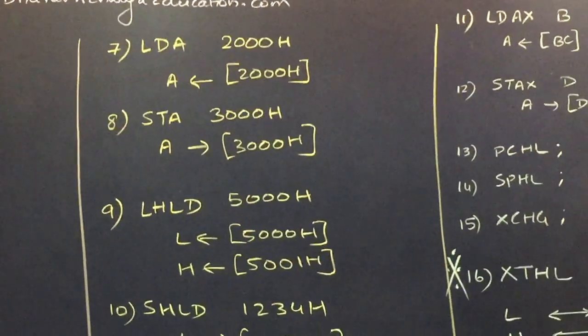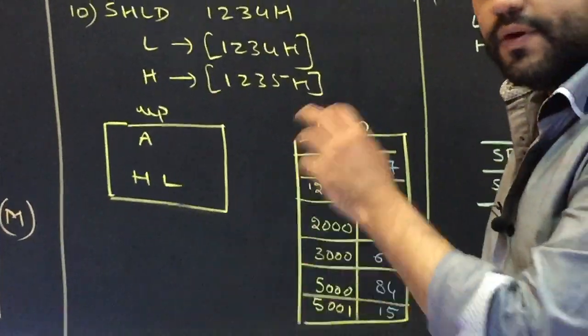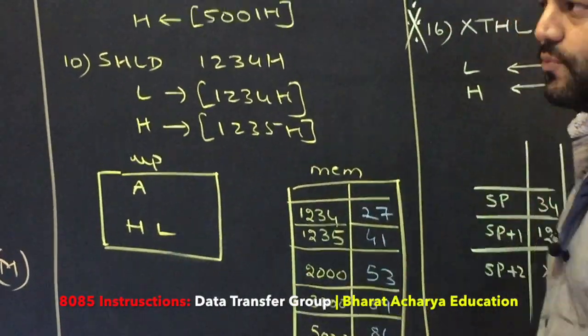So LDA and STA, then LHLD and SHLD. Again, we're not going to learn them dry. We're going to learn them with pictures, with examples, so that you clearly understand what they are.